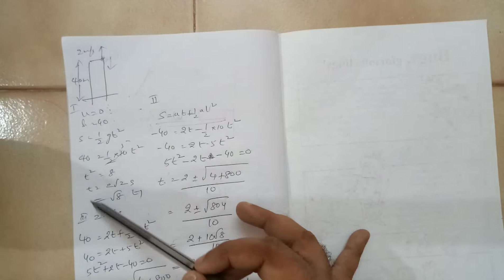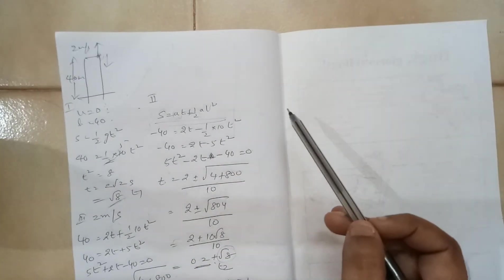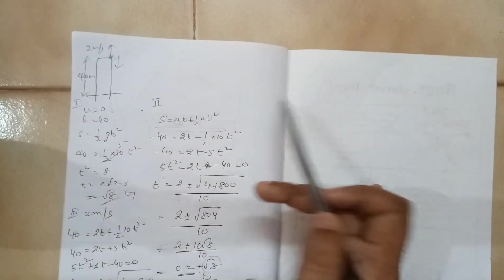So g, I have taken 10. So when you calculate this, you are getting root 8 seconds. Now let us take case 2.